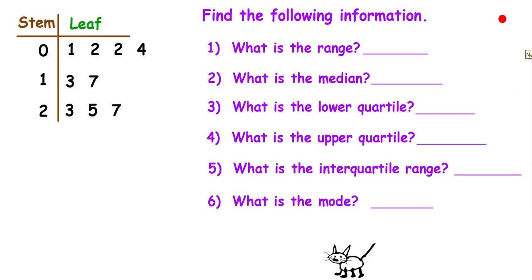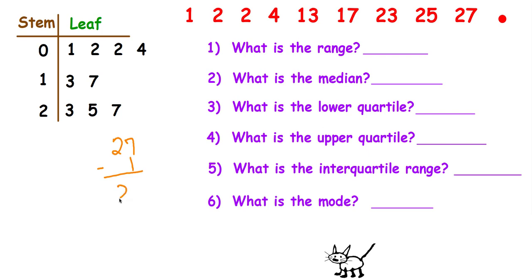Okay, I'm giving you another stem and leaf plot, and I want you to find this information. Go ahead and pause the video while you do your work. The first thing you need to do to find this information is probably pull the data off of the stem and leaf plot. And it's going to be in order. Now for you to be able to find the range, you're going to take the biggest number. You're going to subtract the smallest number. So the range of this set of data is 26.